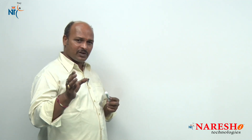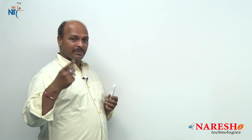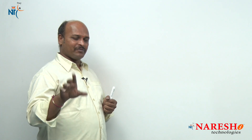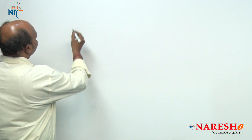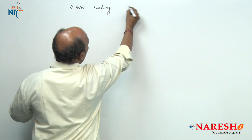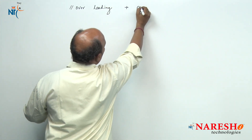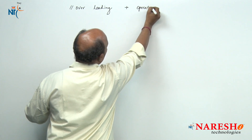Why are we overloading? Because the plus operator generally works on predefined data types like integers and floats. But in this example I am going to add two objects — because each object contains a different string inside it. I want to add the strings, which means I want to add the objects.